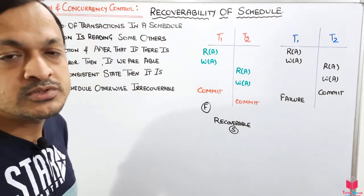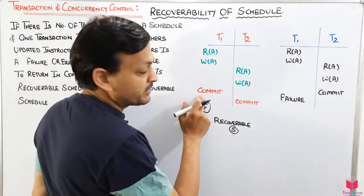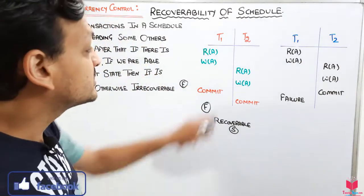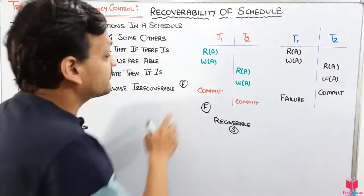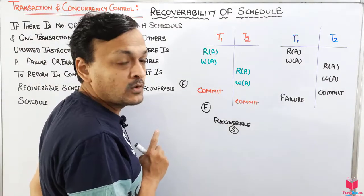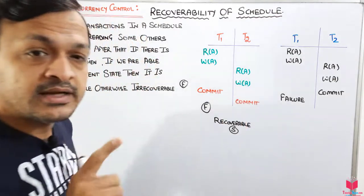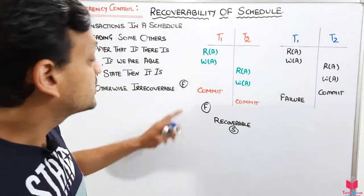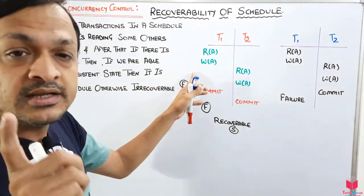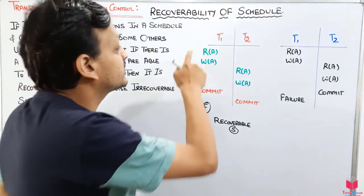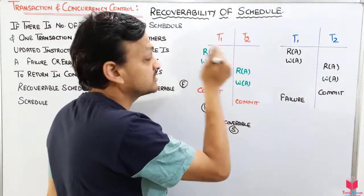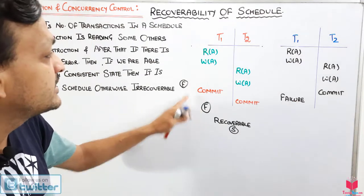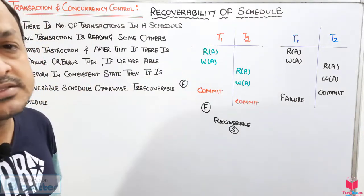Now suppose the commits do not exist and there is a failure at this point. T2 has already read the updated value from T1. In that case, we will roll back T2 and we will also roll back T1. So this schedule will always be in a recoverable state, because we have returned to the consistent state after rolling back both transactions — moving both back to their starting points. That is the consistent state of the schedule.